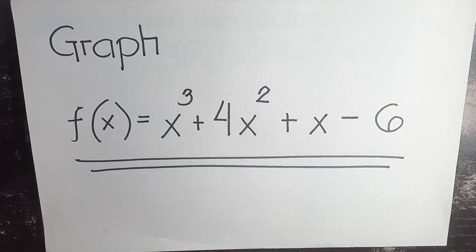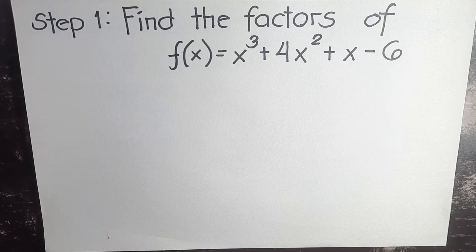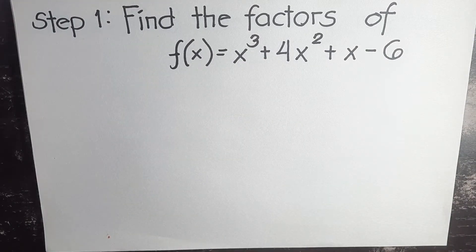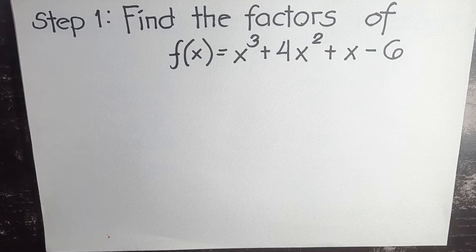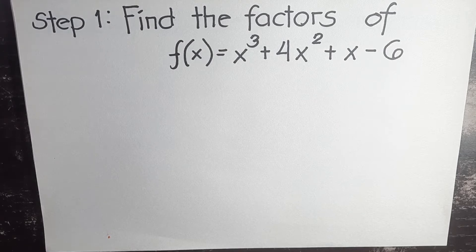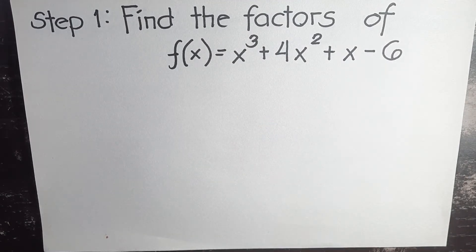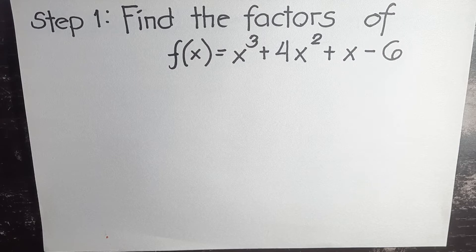In order for us to graph this given polynomial, we'll proceed with step one. Step one is to find the factors of f(x) = x³ + 4x² + x - 6. Our given polynomial is in third degree, which means there are three factors as well. The number of factors depends on the degree of the polynomial. Third degree, three factors. We will be using synthetic division because it is one of the easiest and quickest ways to do so.